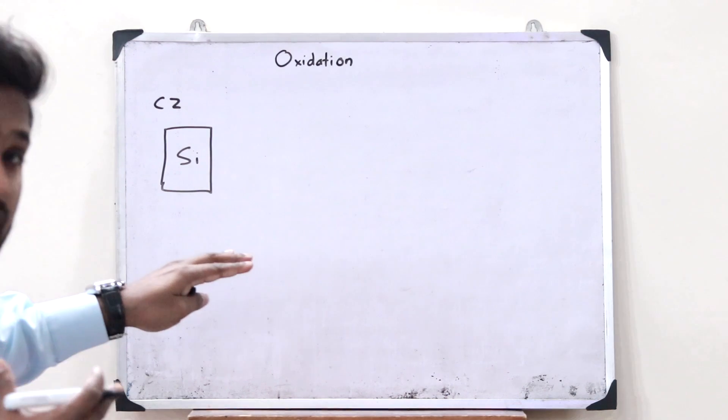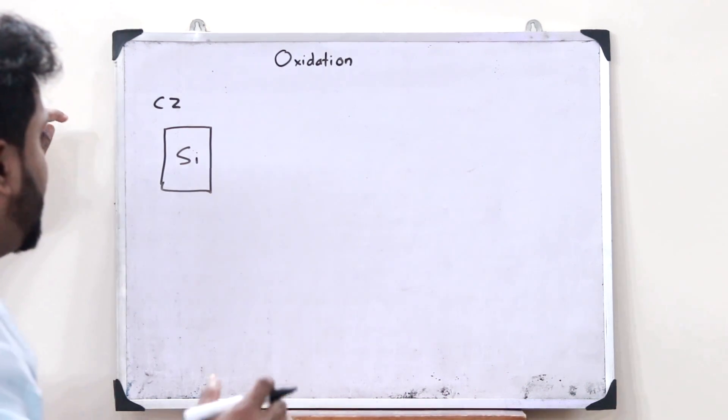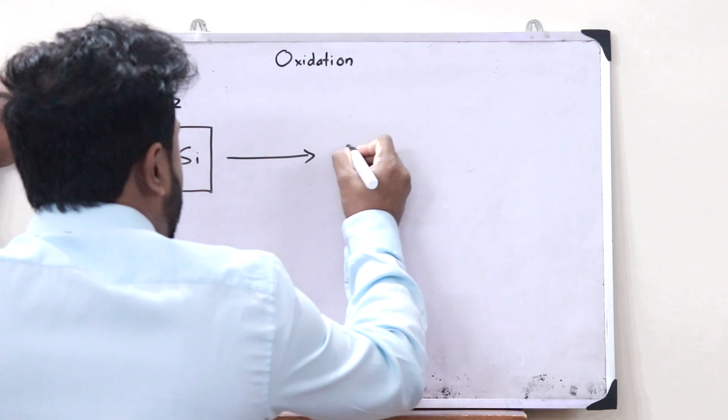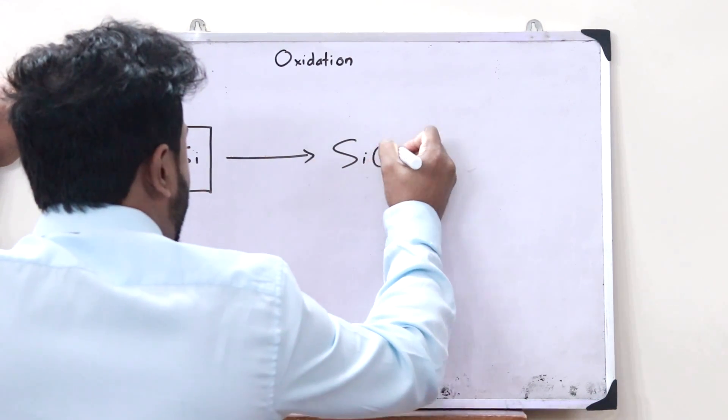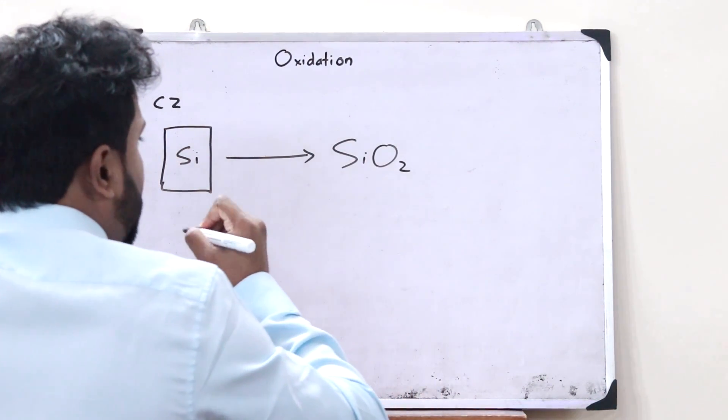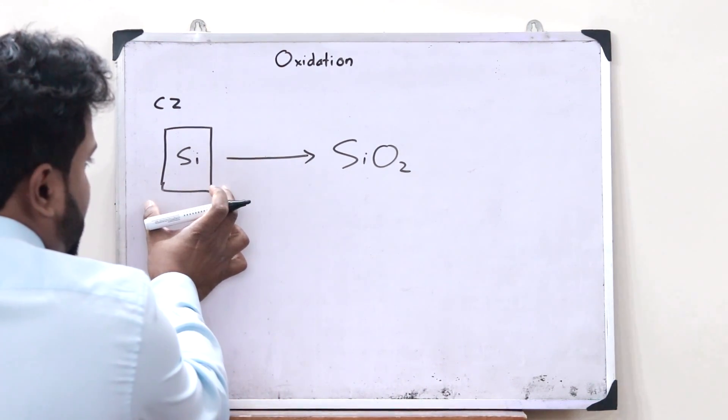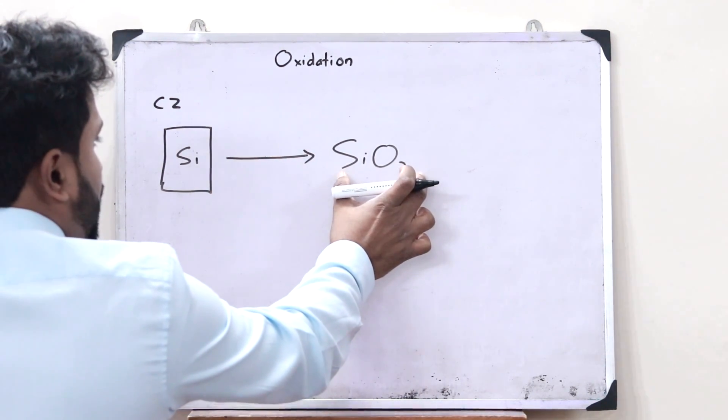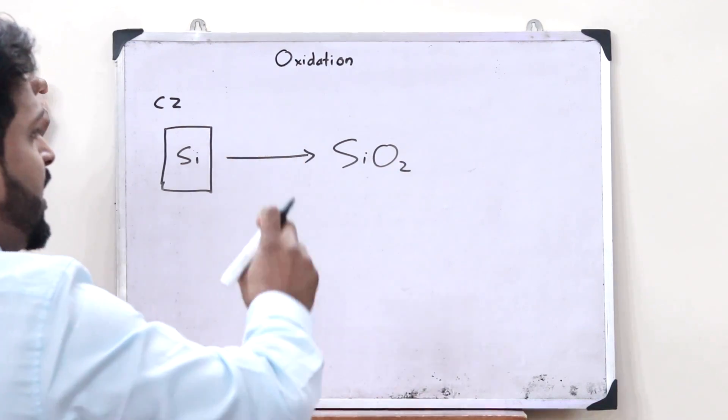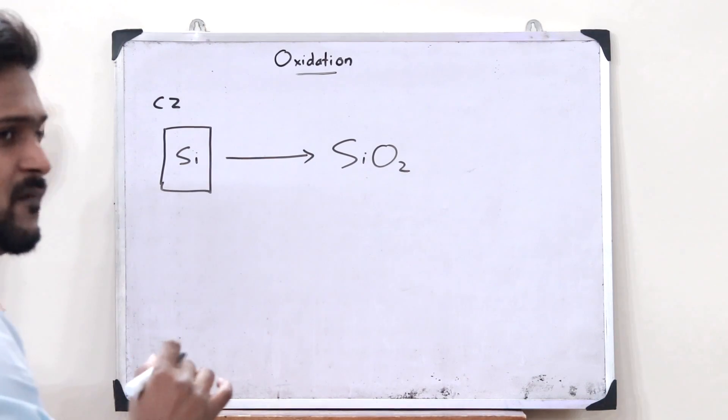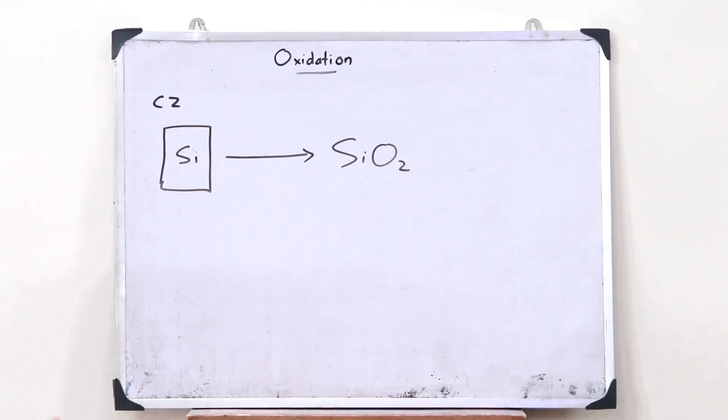Now let us assume that I want to convert this particular silicon wafer into silicon dioxide, that is SiO2. Then this process in which silicon wafers are converted into SiO2 or silicon dioxide is simply what you refer to as oxidation. As simple as that.